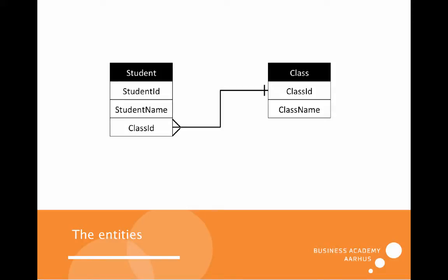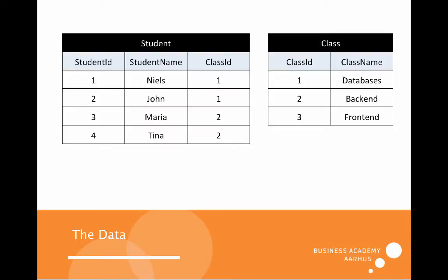We have these two entities — we have students and we have classes. One class can contain many students and one student can only be in one class. We have four classes and five students, and Dan is not in a class.